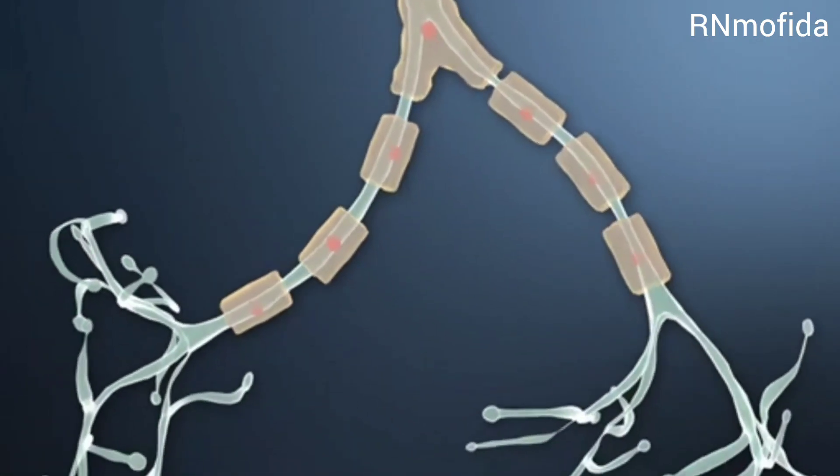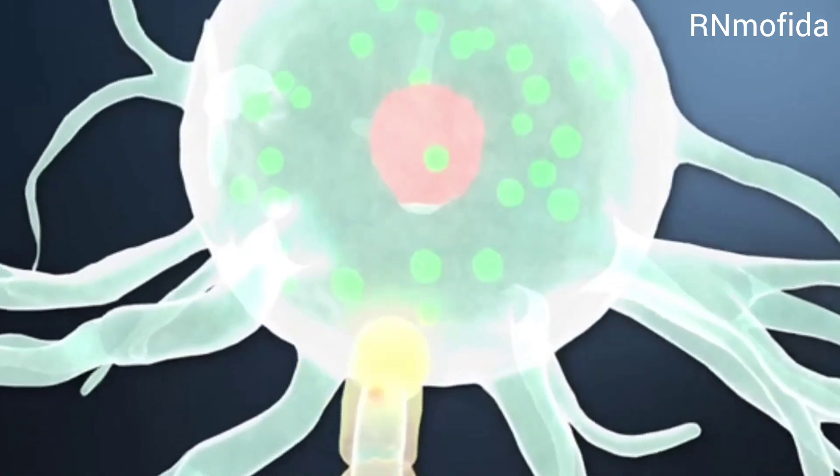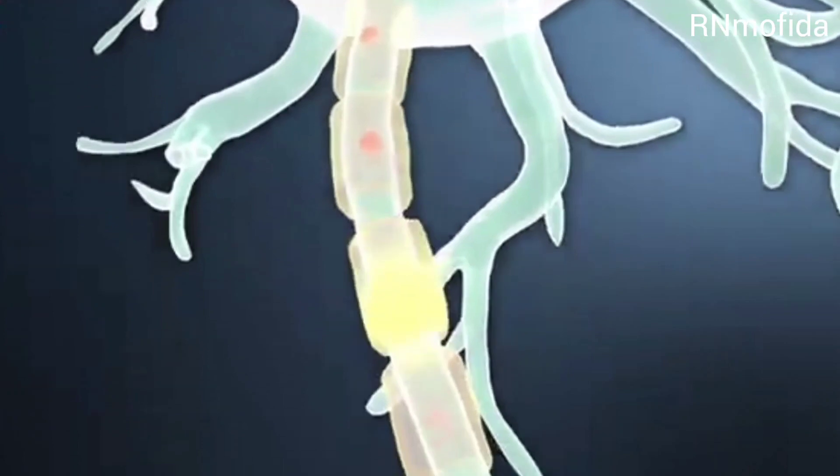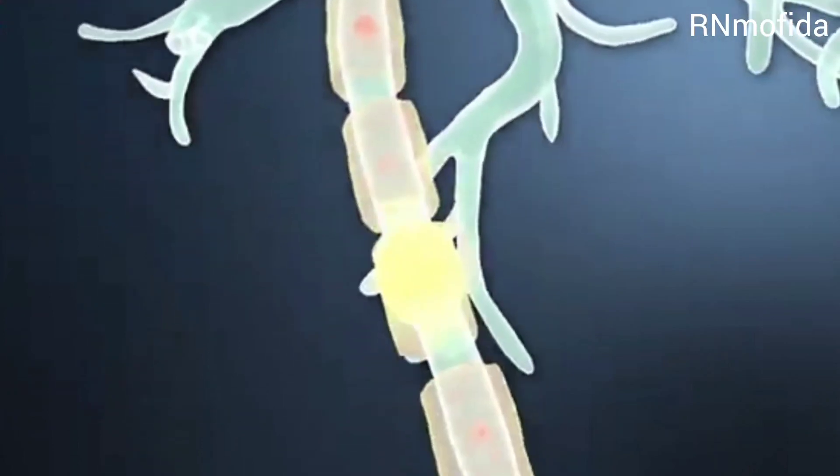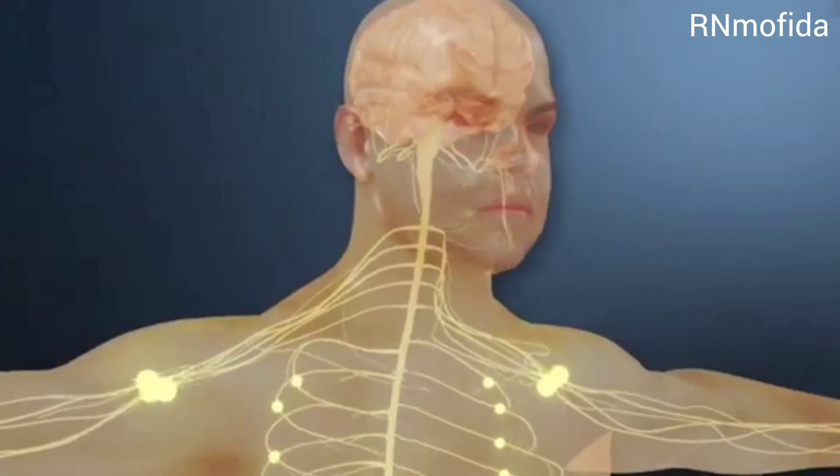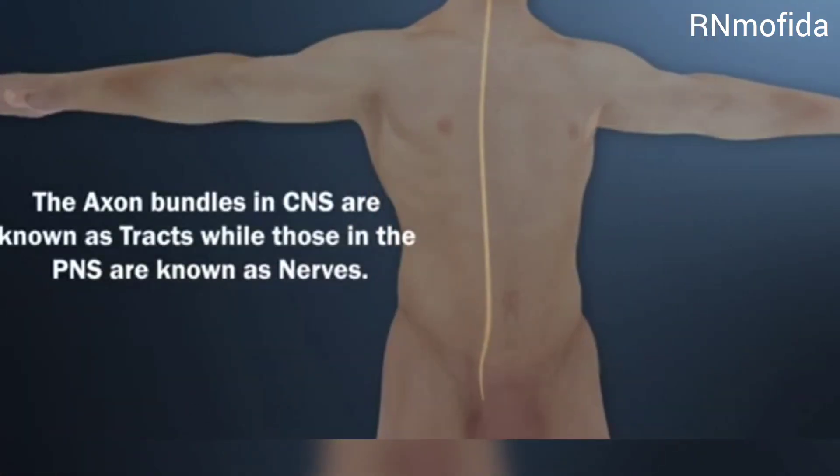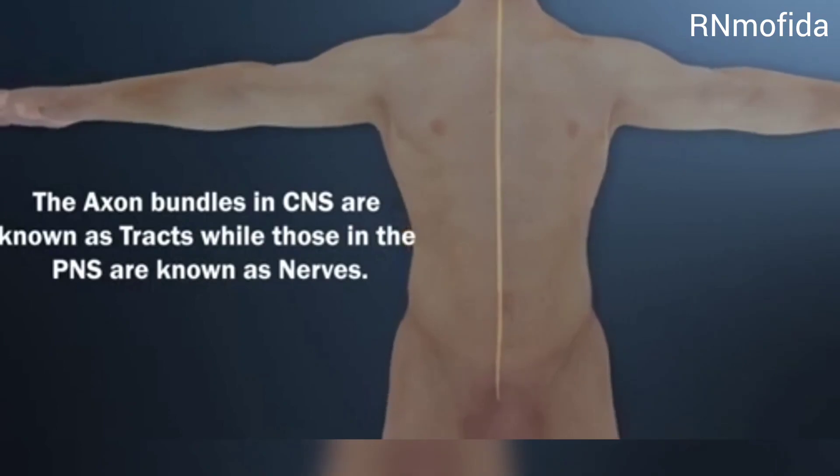Axons form a small filament structure called telodendria which ends in synaptic knobs. The axon carries nerve impulses from the cell body and sends them to other neurons. Axon bundles in the CNS are known as tracts, while those present in the peripheral nervous system are known as nerves.